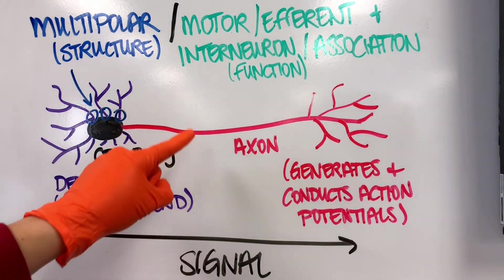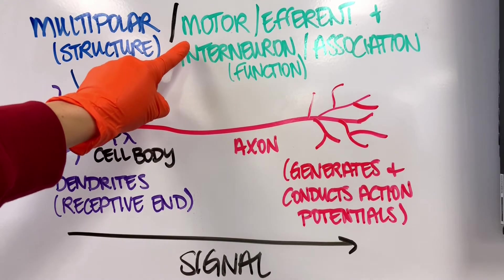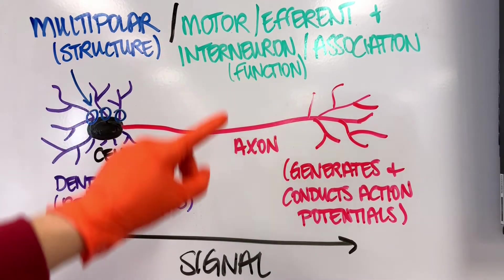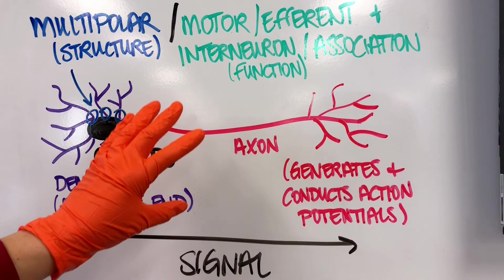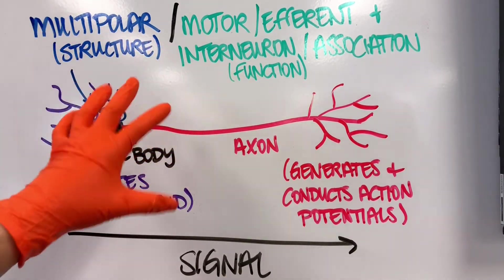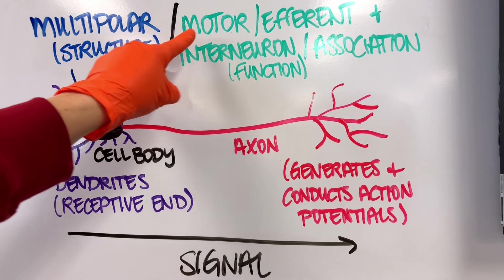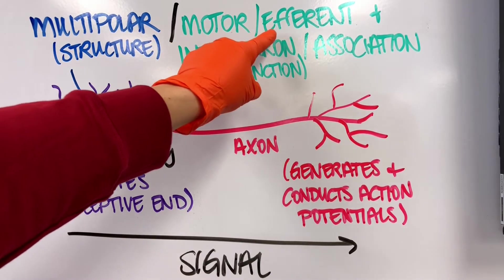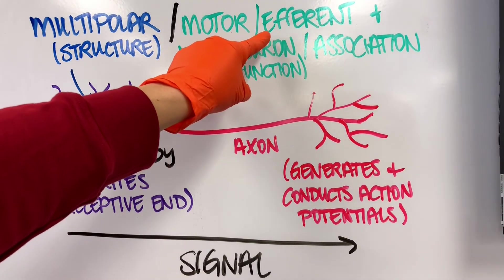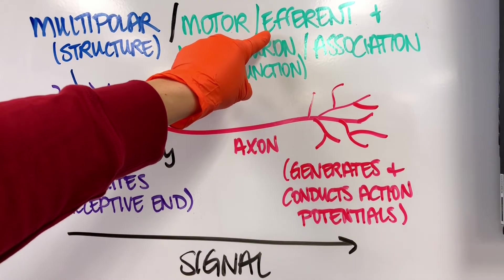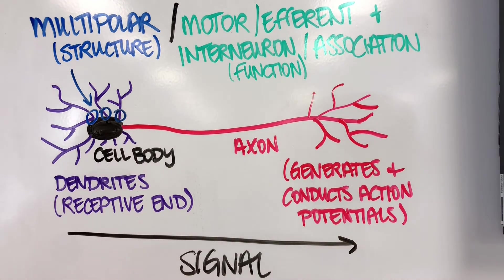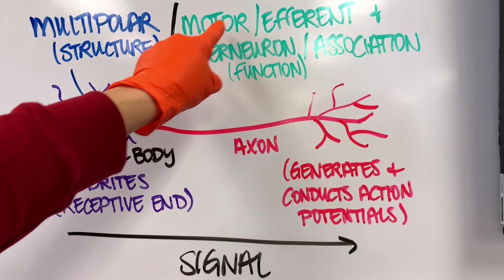So what do multipolar neurons do? They are all of the motor neurons we have in the body, meaning all the neurons responsible for transmitting mechanical instructions look like this. That's what motor refers to. We also call that efferent, or what I like to say is efferent. I like to mispronounce the first letter on purpose because afferent and efferent sound very similar.